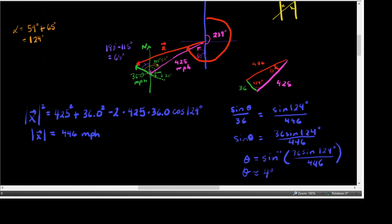And that should be about 4 degrees. And so the bearing is the 239 degrees, the pink one, plus the 4 we just found. And so the bearing is about 243 degrees at 446 miles per hour. All right, so that finishes that example.